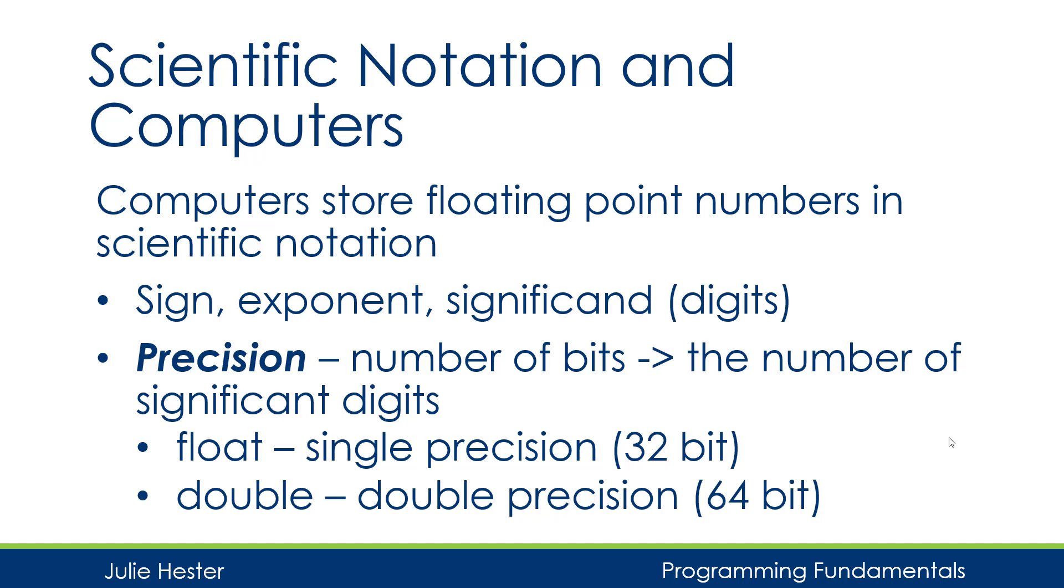Now, if we go back to what is the mass of the Earth, that was a 24-digit number. And even with a double, we can't store 24 digits of precision. We are still limited to about 16 digits.